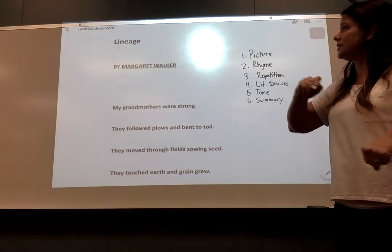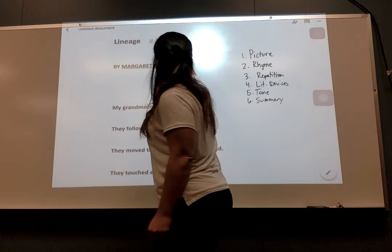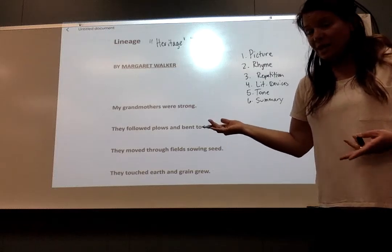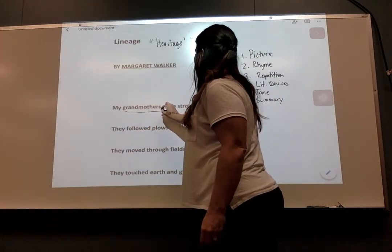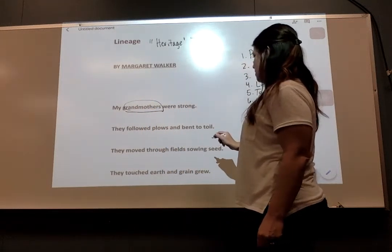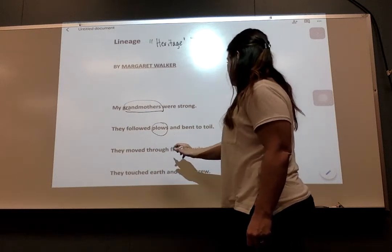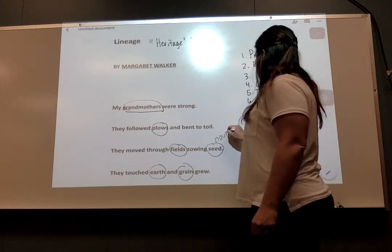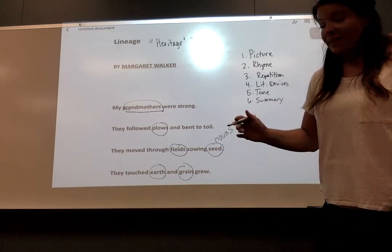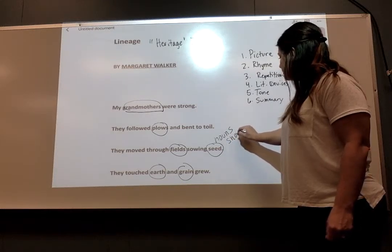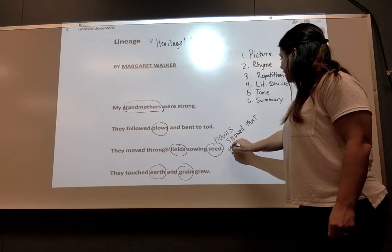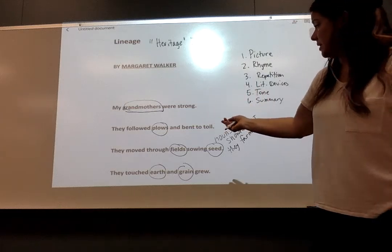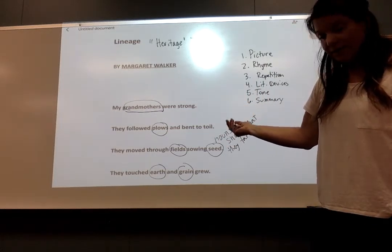And then I also looked at lineage, and I wondered if this was the same thing as heritage. And I kind of put a question mark there, just because I think that maybe it is, because it's talking about grandmothers. And I noted that, so I think I circled all the nouns: grandmothers, plows, fields, seeds, earth, grain, and so on. And so I circled the nouns, and I noticed that the nouns showed that they farmed. I'm just gathering that they farmed, because they're working in fields with plows and seeds, right? So I'm saying that they're farmers.